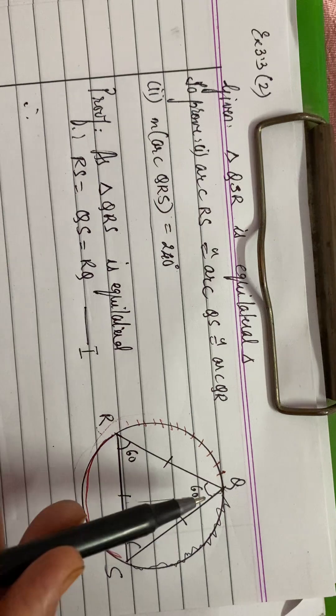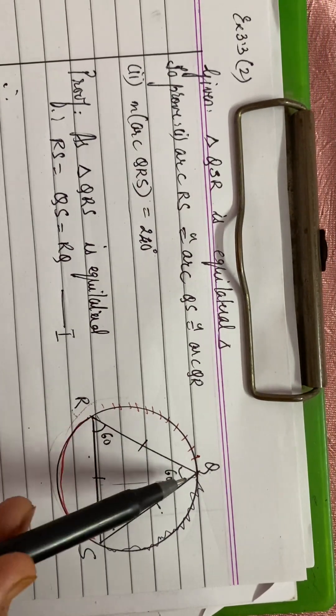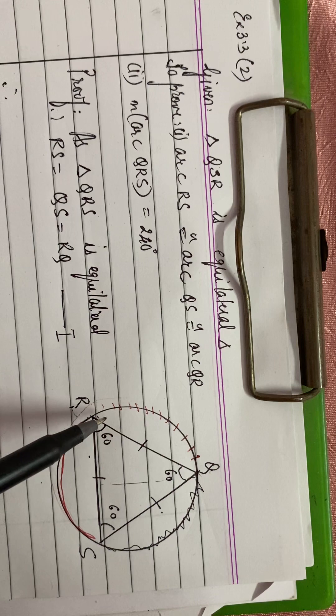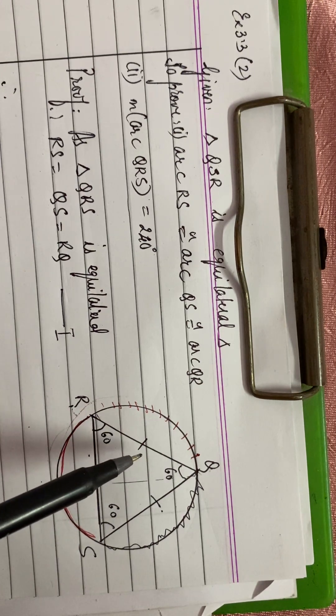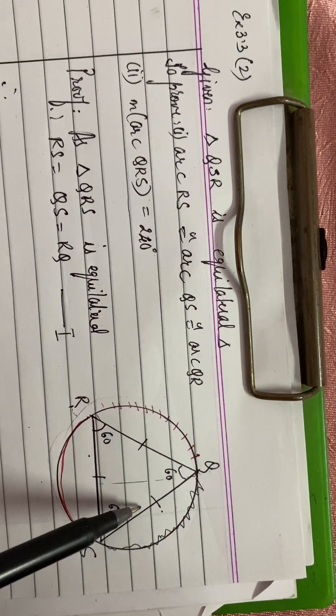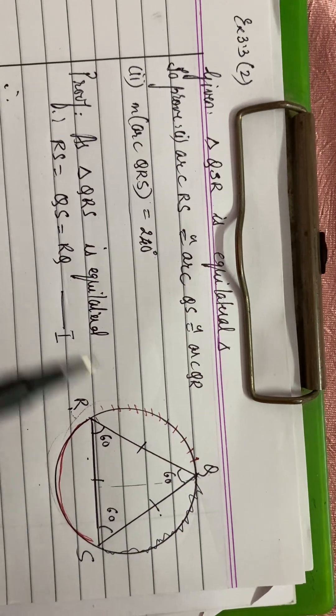Now if the three sides are equal, this means these are the chords of the circle. And we have studied a theorem that in the same circle or in congruent circles, congruent chords subtend congruent arcs. So therefore...